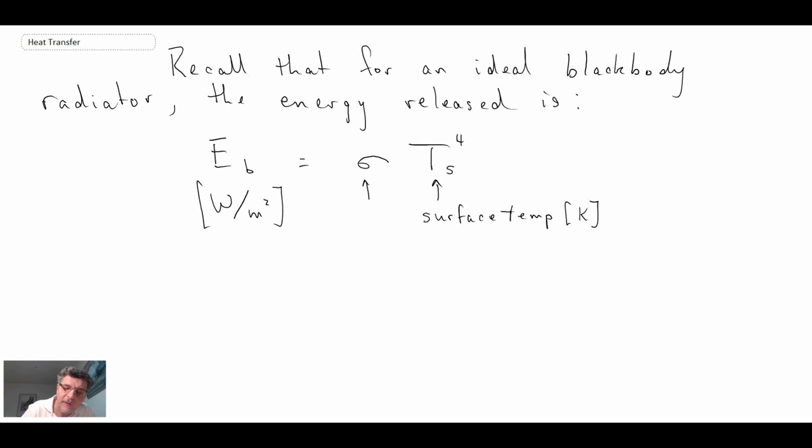Now, it turns out that real surfaces do not emit this full amount of radiation. They actually emit a little less. And so a real surface emits with the following equation. And here, this is the emissivity.